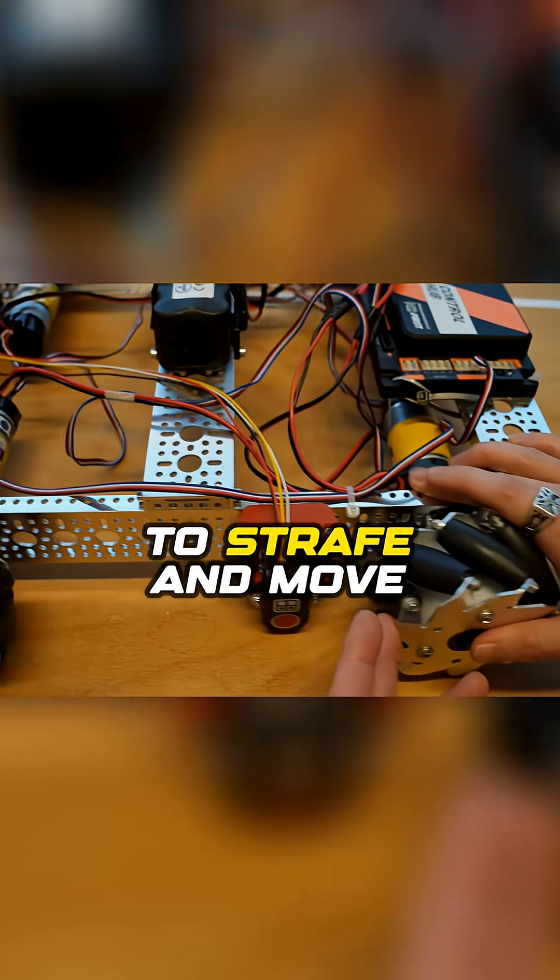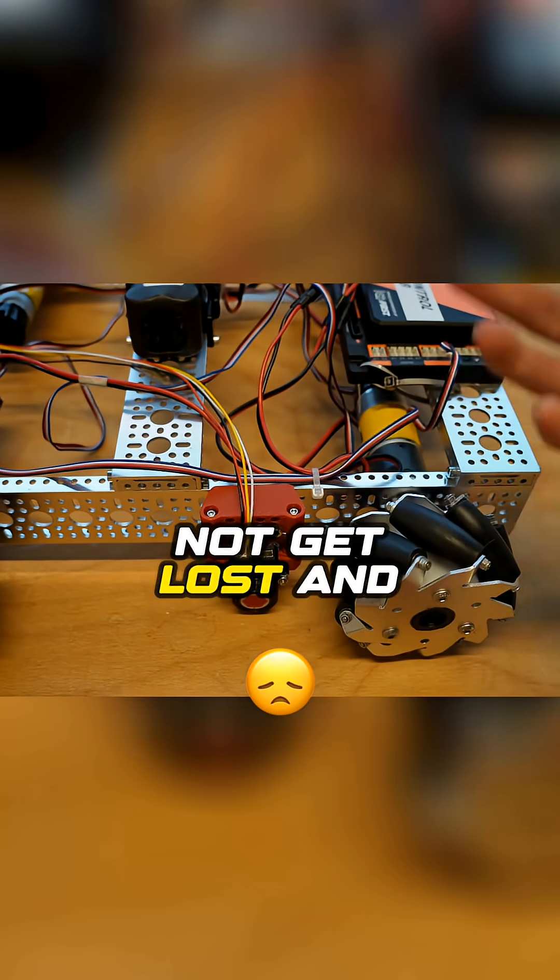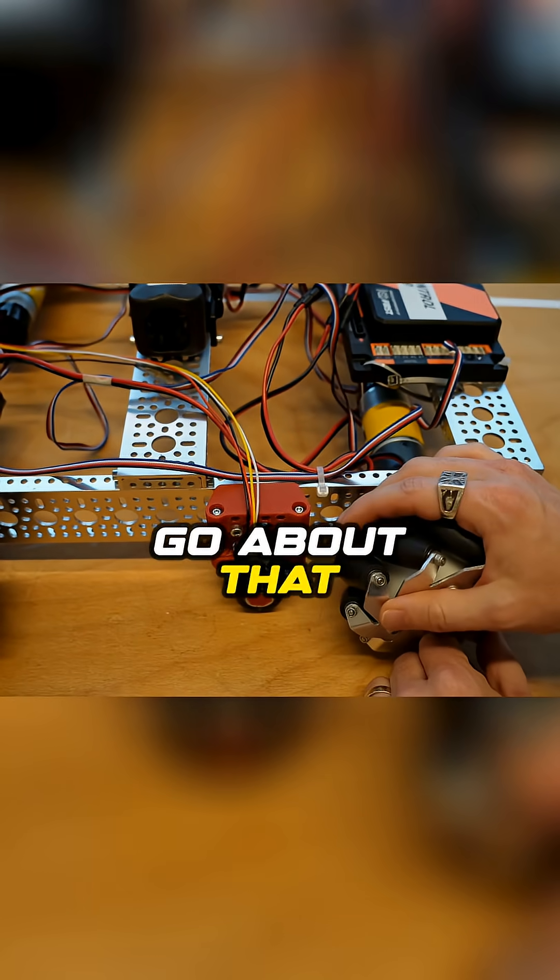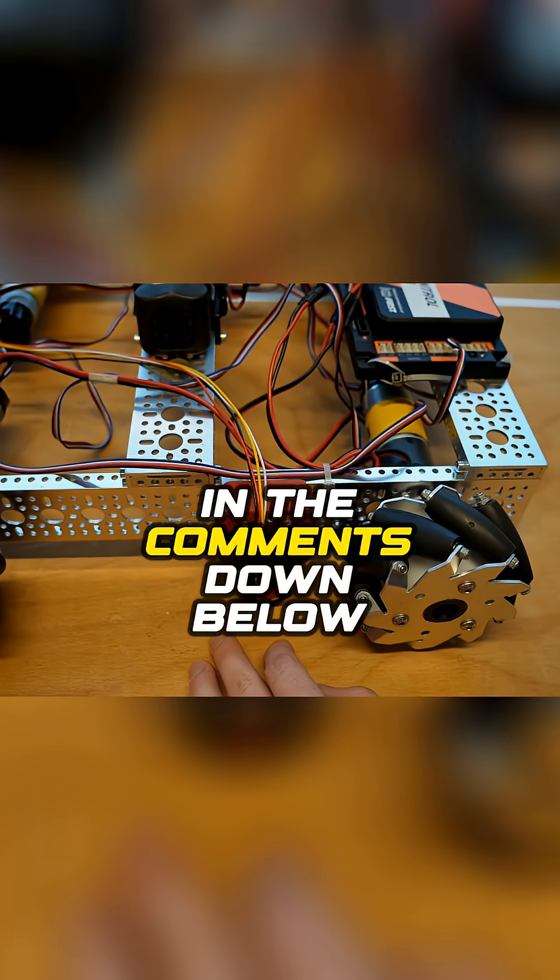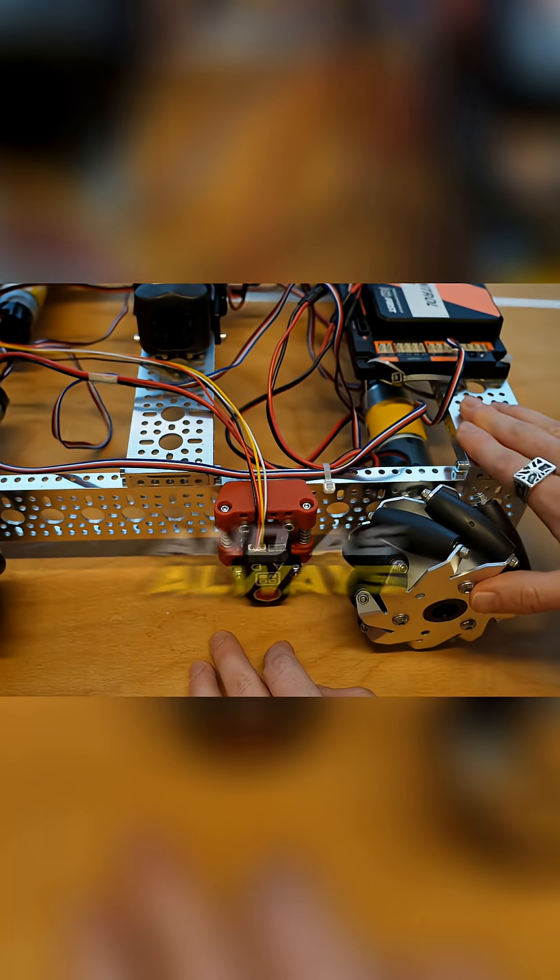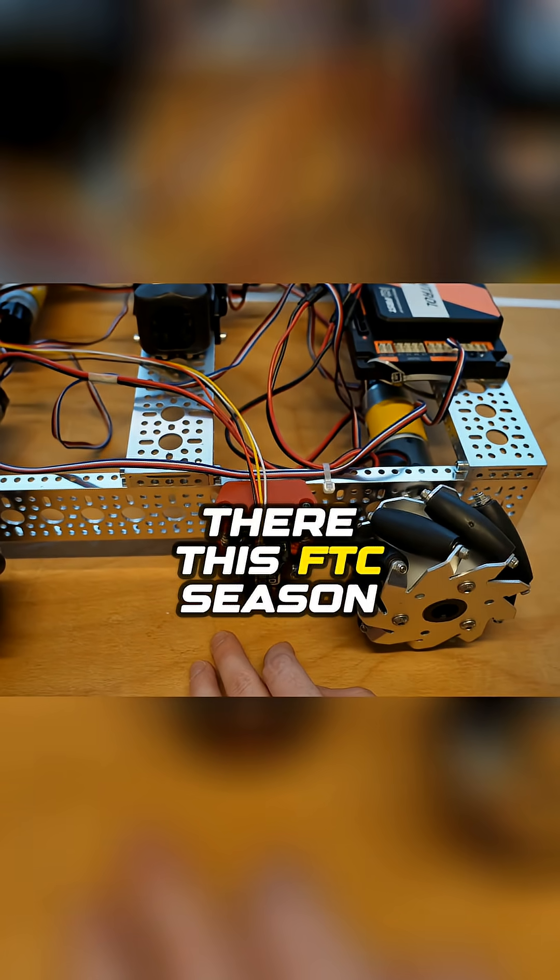Do you want to have a robot that's able to strafe and move around the field and not get lost and keep track of where it is? Deadwheel odometry is definitely the best way to go about that. Let me know if you got any questions in the comments down below. And as always, best of luck out there this FTC season.